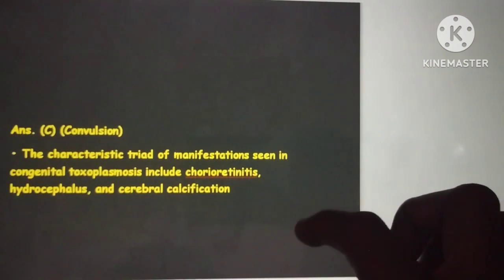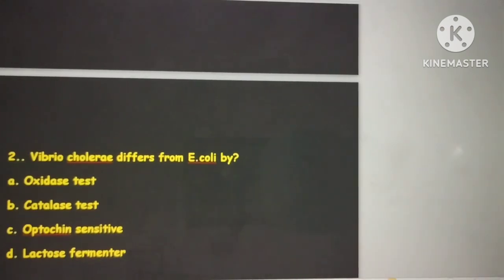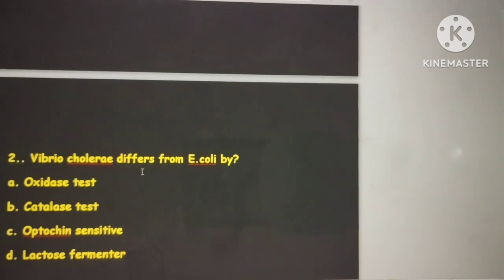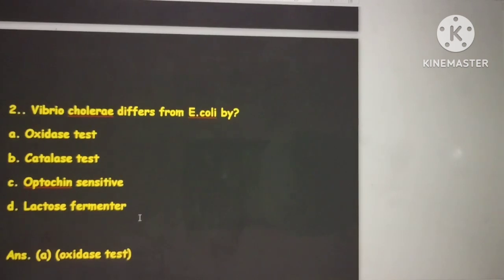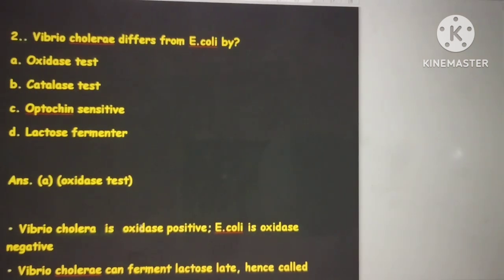The next question: Vibrio cholerae differs from E. coli by oxidase test, catalase test, optochin sensitive, or lactose fermenter. The answer is oxidase test. Always remember Vibrio cholera is oxidase positive.